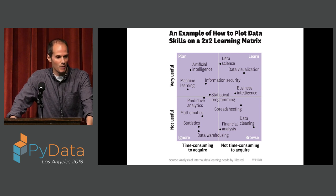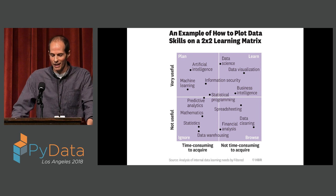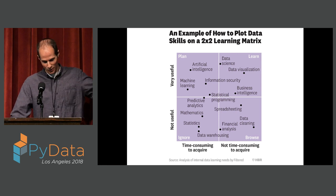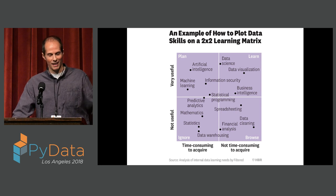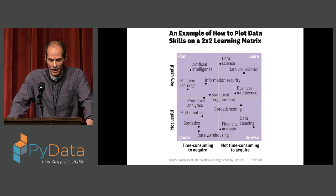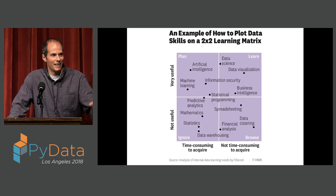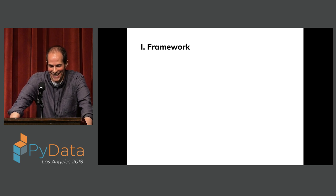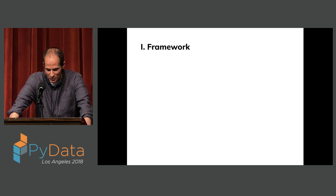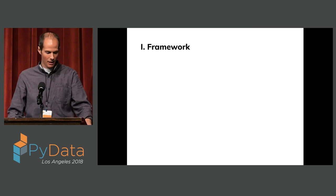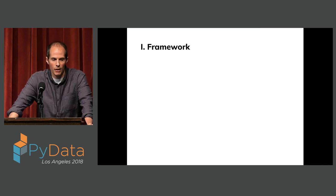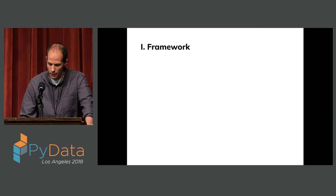To frame it in the context of this hilariously bad infographic from Harvard Business Review that is being torn apart by the community right now — we're going to start with financial analysis, which is not useful and halfway between time-consuming and not time-consuming to acquire. And then we'll move on to statistics, which is squarely in not useful and time-consuming. Pretty bad graphic. So this is mostly a bit of domain context so that we know we're asking and answering the right questions.